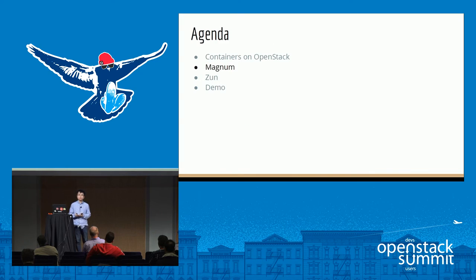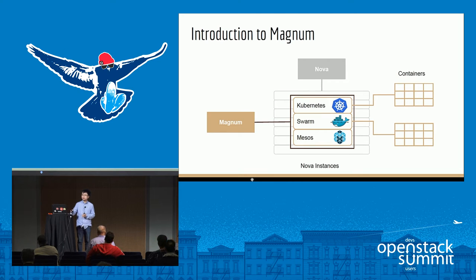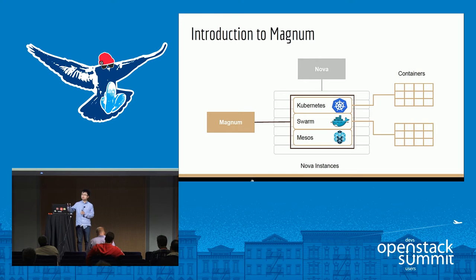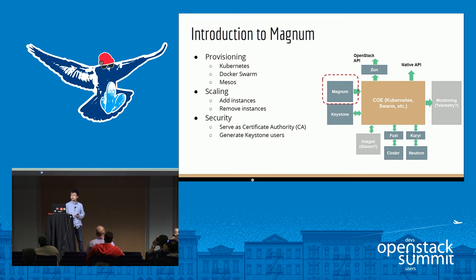Now I'll give a general introduction to the Magnum project. What Magnum provides is a service to deploy COEs on top of a set of Nova instances. After the COE is deployed, you can run containers by using the COE. Importantly, Magnum does not manage containers directly — it manages COEs, and the COEs provisioned by Magnum are what actually manage the containers. Major features include provisioning Kubernetes, Docker Swarm, or Mesos, and scaling the cluster at runtime by adding or removing Nova instances.